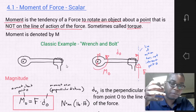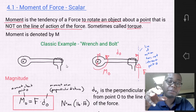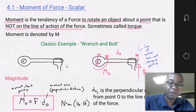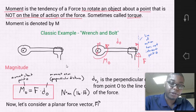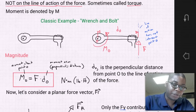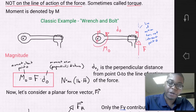A moment is the tendency of a force to cause rotation of an object about some point. The magnitude of a moment about point O is equal to that force times the moment arm D0, where the moment arm is the perpendicular distance from point O to the line of action of the force.